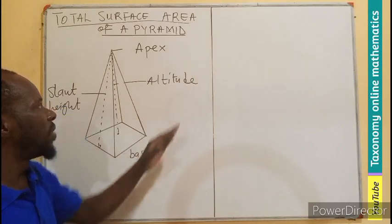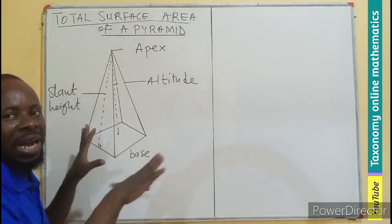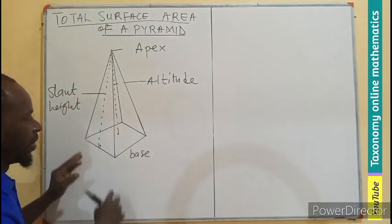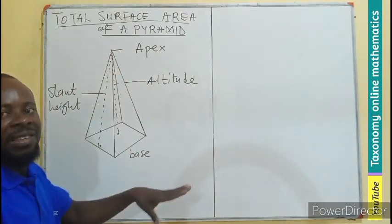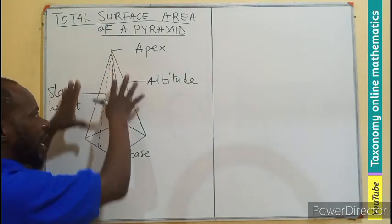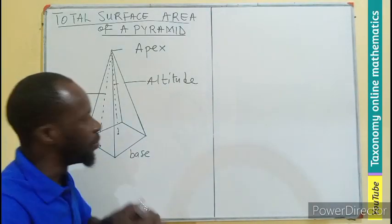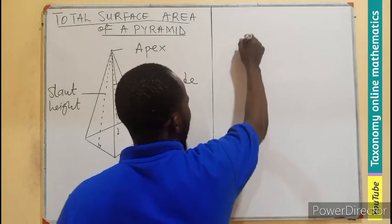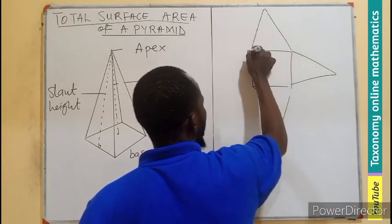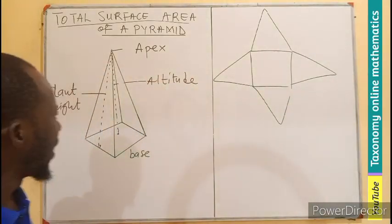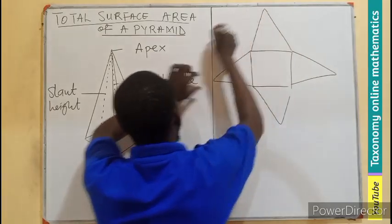We want to find the total surface area — the whole area that this three-dimensional shape can cover on a flat surface. When it is placed base-down, the base does not cover any flat surface on top. To know the total area, we dismantle the pyramid into each individual shape, meaning we cut it open. This gives rise to the net of a square base pyramid, where all the vertices are joined at the common apex.